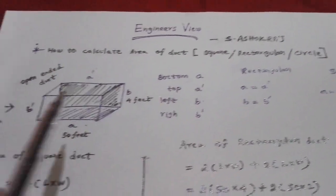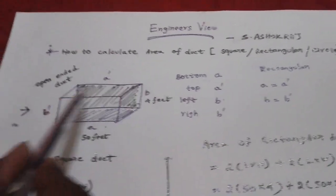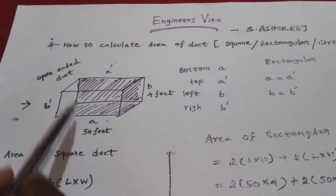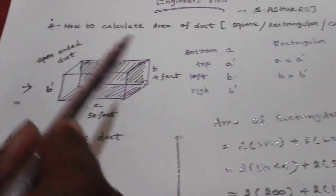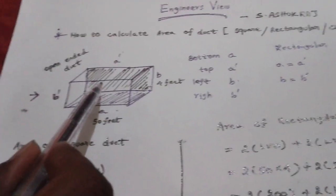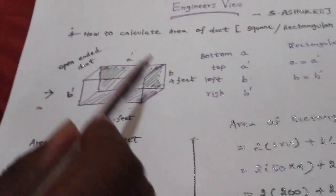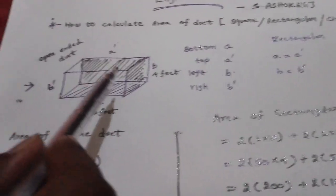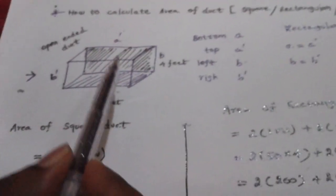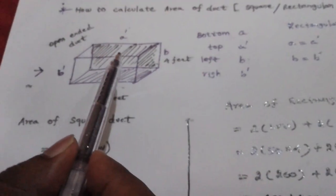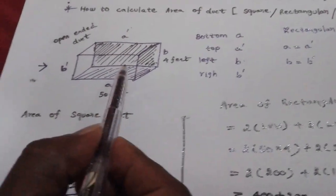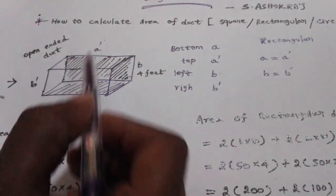Now let's see. This is a rectangular duct. There is a duct in the shape of a square where every four sides are equal. But if you look at the rectangle, the opposite sides are equal.